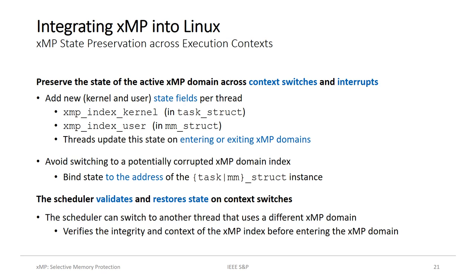Having equipped the different Linux components with XMP, we preserve process- and thread-specific state on context switches. We extend the user and kernel thread state with dedicated fields that record the XMP domain in which each thread resides, so the scheduler can restore the saved XMP domain when a thread is next scheduled. To avoid switching to a potentially corrupted XMP domain index, we bind the state to an immutable context and equip the index fields with HMACs for the associated domains — for example, bound to the address of the task_struct instance, which is unique and immutable. The scheduler verifies the HMAC before entering the XMP domain, obstructing potential attacks.